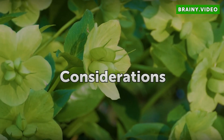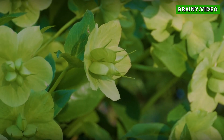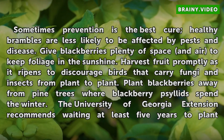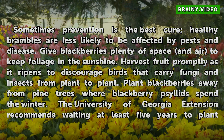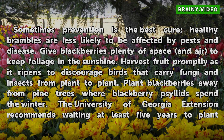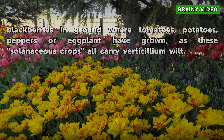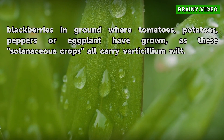Sometimes prevention is the best cure — healthy brambles are less likely to be affected by pests and disease. Give blackberries plenty of space and air to keep foliage in the sunshine. Harvest fruit promptly as it ripens to discourage birds that carry fungi and insects from plant to plant. Plant blackberries away from pine trees where blackberry psyllids spend the winter. The University of Georgia Extension recommends waiting at least five years to plant blackberries in ground where tomatoes, potatoes, peppers, or eggplant have grown, as these solanaceous crops all carry verticillium wilt.